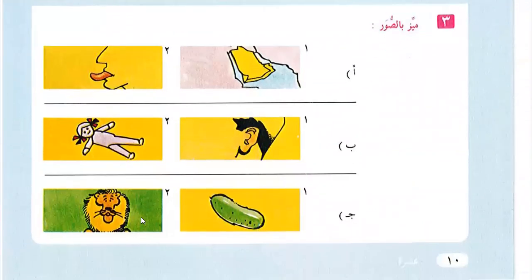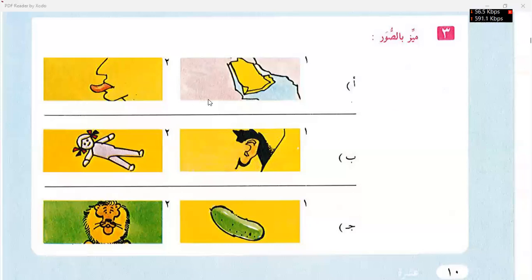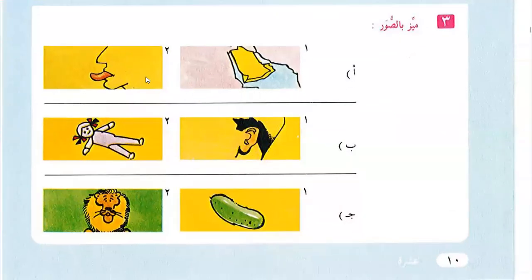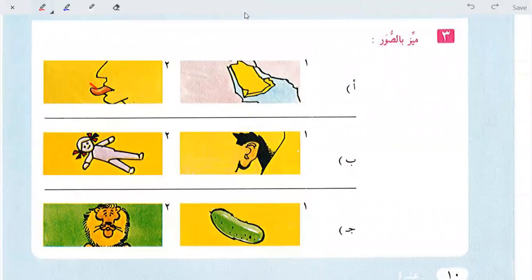Next we have Mayel Biswar — differentiate between the pictures. There are two pictures. I will say a name and you tell me whether it is the first or second picture. For the first picture say Surat al-Ula, for the second say Surat al-Thaniya. Lisan — Surat al-Thaniya. Uzun — Surat al-Ula.